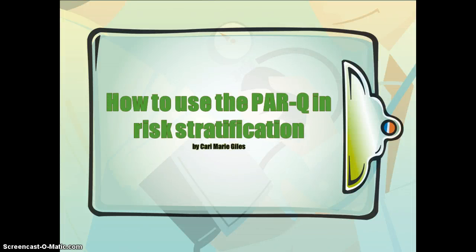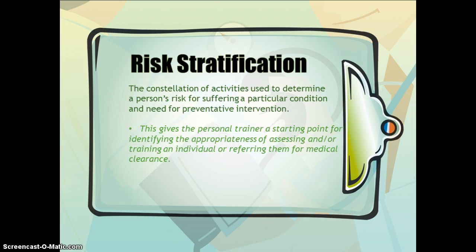How to Use the PAR-Q in Risk Stratification by Kari Marie Giles. Risk stratification is the constellation of activities used to determine a person's risk for suffering a particular condition and need for preventive intervention. It gives the personal trainer a starting point for identifying the appropriateness of assessing and/or training an individual or referring them for medical clearance.